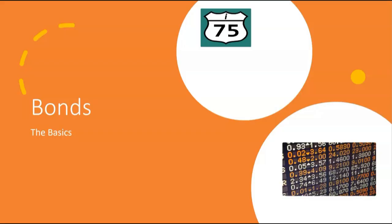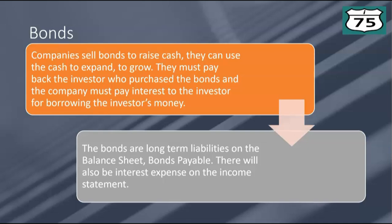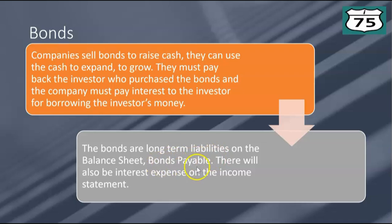Bonds will obviously be tested on the exam, and the key is to get off to a good start and understand the basics. So why issue bonds? Companies sell bonds for one reason: to raise cash, and they can use that cash to expand and grow. The bad news is they must pay back the investor and pay interest for borrowing the investor's money. Bonds are long-term liabilities on the balance sheet called bonds payable, and there will also be interest expense on the income statement.